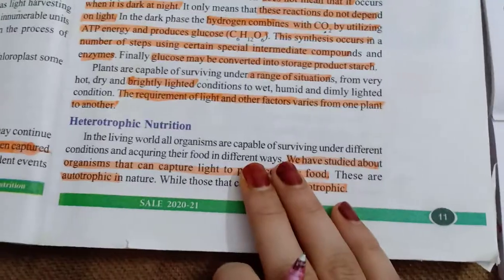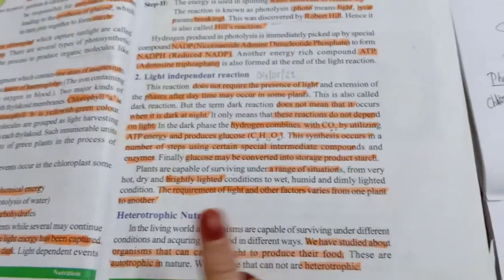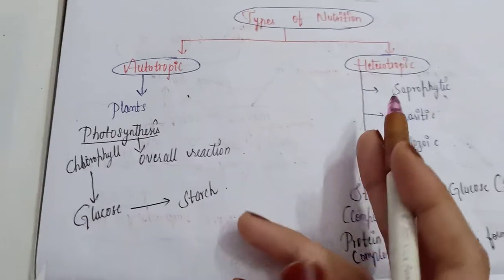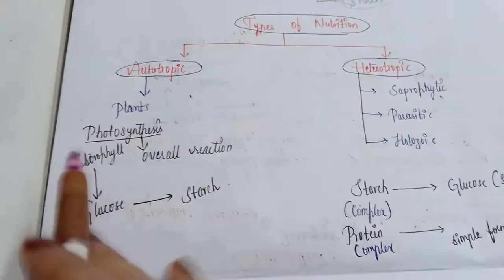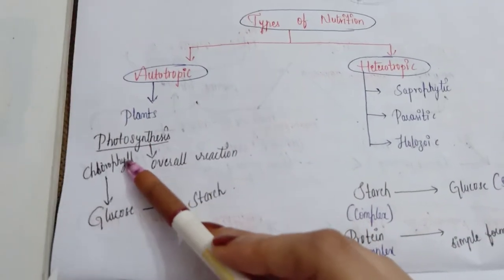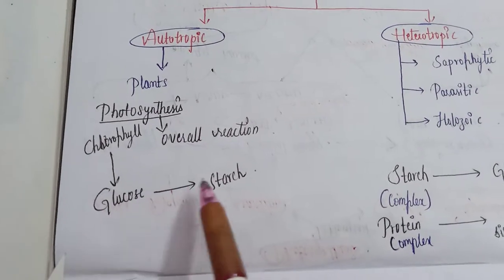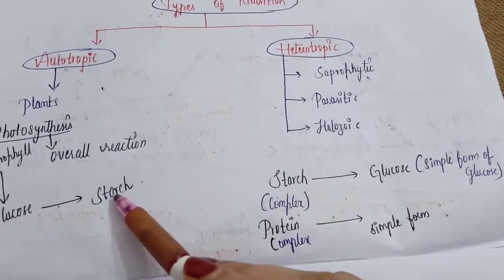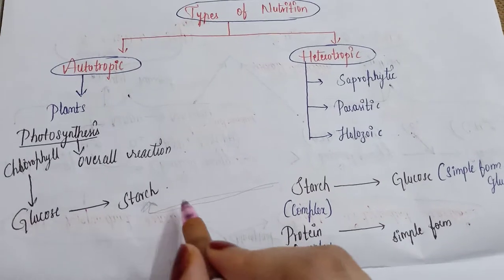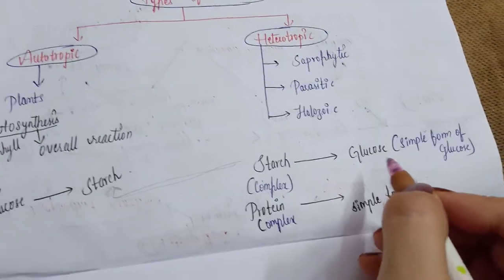Our next topic is heterotrophic nutrition, which comes under the topic of nutrition. At the start of our lesson we discussed types of nutrition — autotrophic and heterotrophic. Autotrophs are plants, and heterotrophs are organisms that are dependent on plants or other organic materials. In autotrophs, photosynthesis occurs in the chloroplast, they synthesize glucose, and glucose is converted into starch. But in heterotrophs, they utilize this starch.